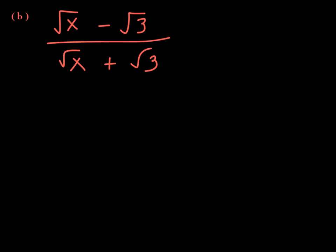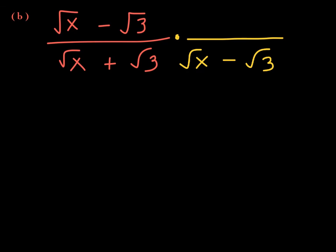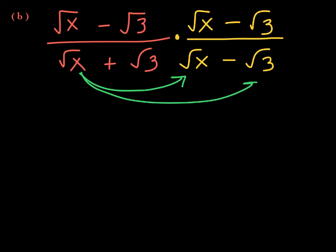Another false move is to think the numerator and denominator are opposites — they're not. The opposite of the square root of x is negative square root of x, and that's not what you have in the denominator. Since the denominator has two terms, just like the previous problem, you must multiply by the conjugate of the denominator. The conjugate of the square root of x plus the square root of 3 is the square root of x minus the square root of 3. Multiply numerator and denominator by this conjugate.